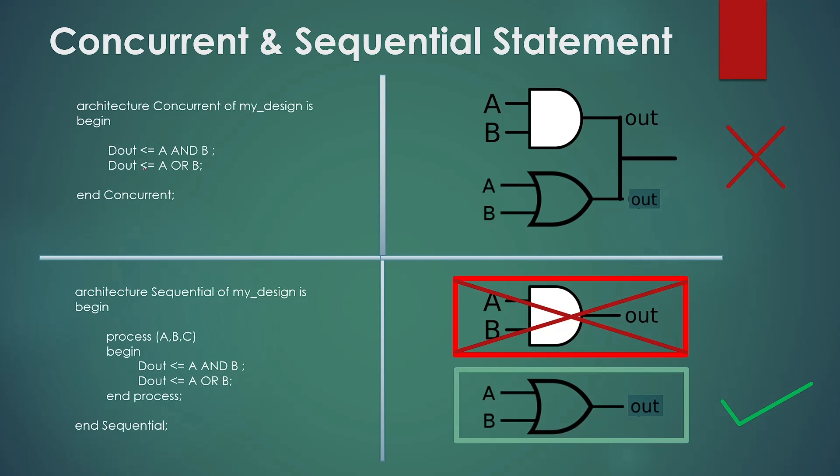Let's try to design it how it is described. So let's talk about the concurrent statements first. You will say okay, there is an AND gate and there is an OR gate, and the output of both the gates are interconnected with each other and gives the output d_out. Can you figure out any problem in this structure?